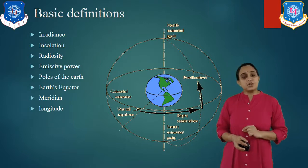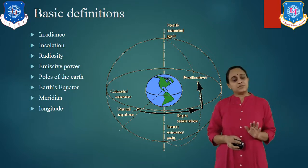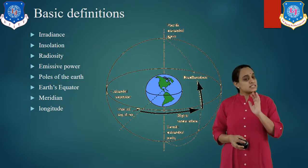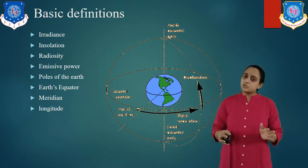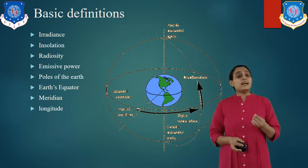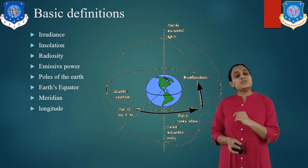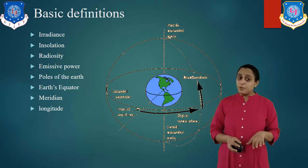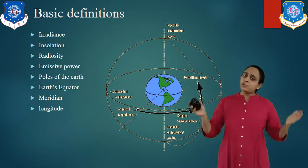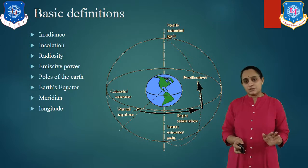The second definition is insolation, known as solar radiation received at the Earth's surface. We are calculating the value of insolation. The rate at which the direct radiation is incident upon the unit horizontal surface at any point on or above the surface is called insolation. Solar radiation received at any point on the Earth's surface is known as insolation.